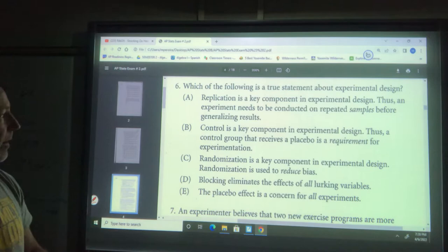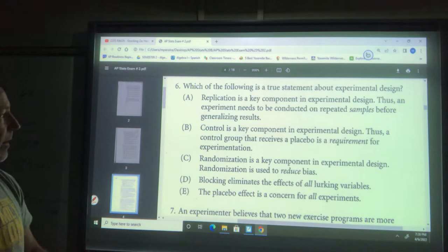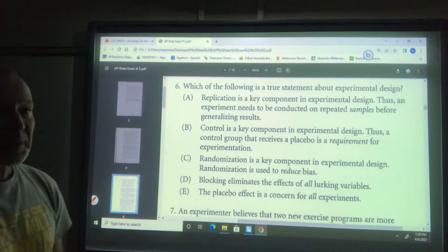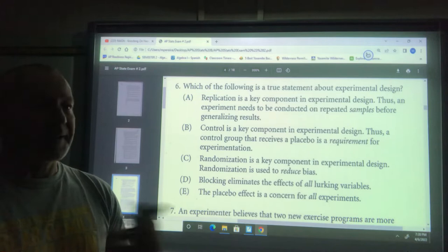Number six: Which of the following is a true statement about experimental design? Replication is a key component, absolutely necessary, but it doesn't have to be done on repeated samples before generalizing results. It could be done on one really large sample.